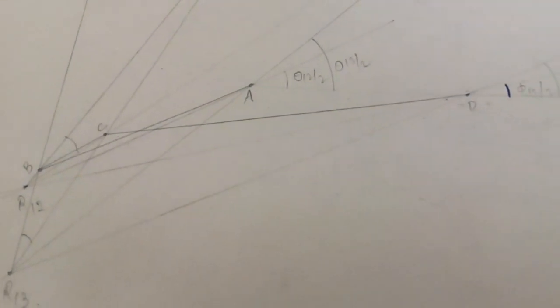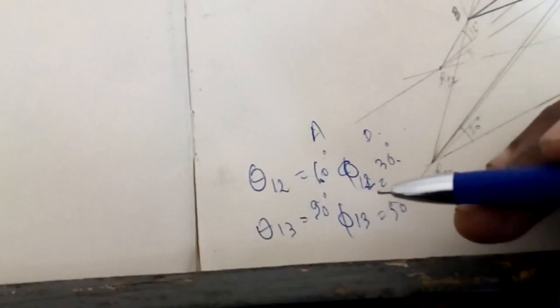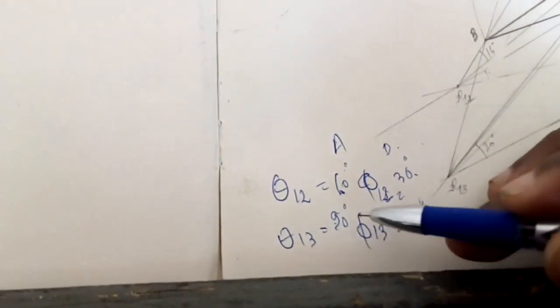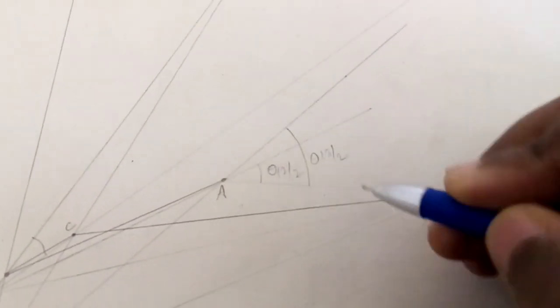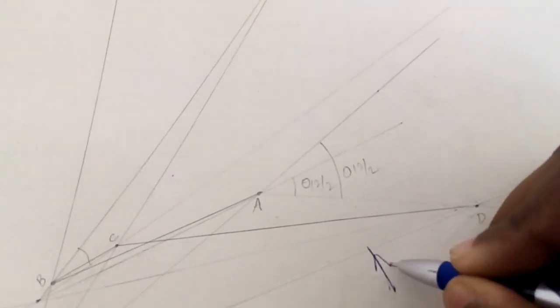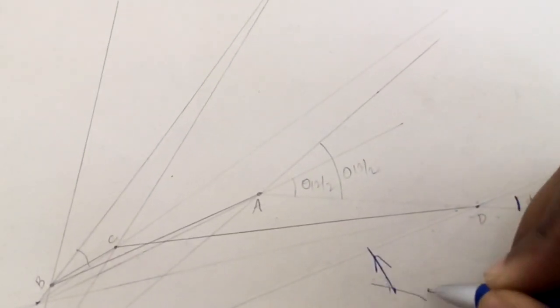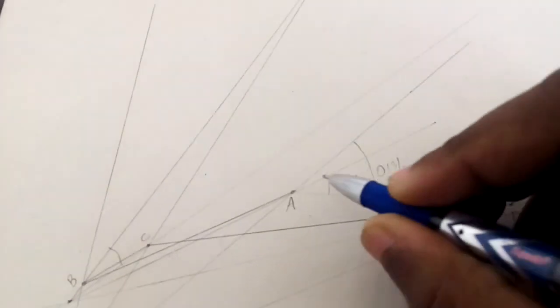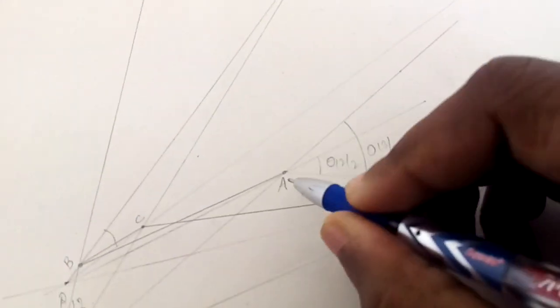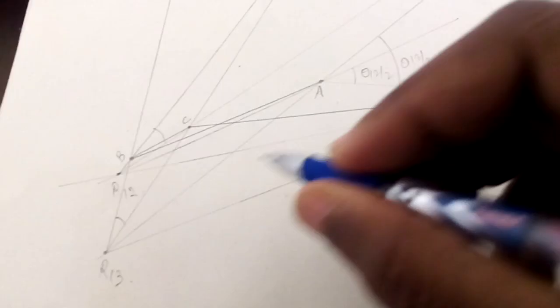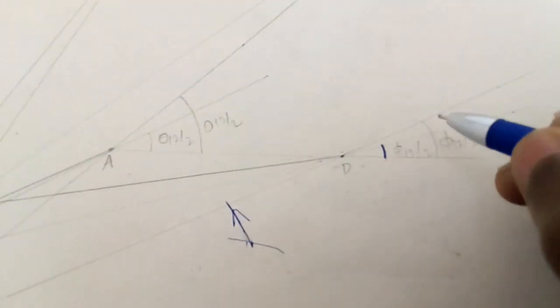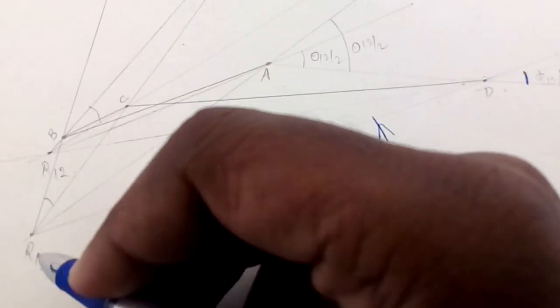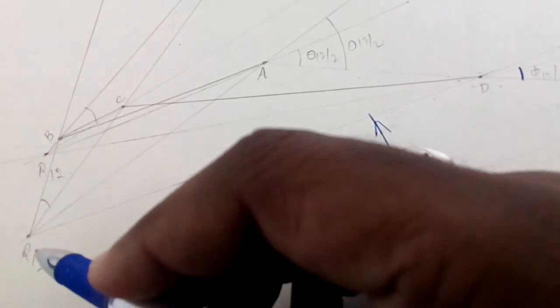Similarly, for the second position where theta 1-3 is 90 degrees and phi 1-3 is 50 degrees, make 45 degrees at A and 25 degrees at D, both anti-clockwise with the x-axis. Extend these lines backward and wherever they intersect is point R13 — the relative pole 13. Always take angles in the anti-clockwise sense.